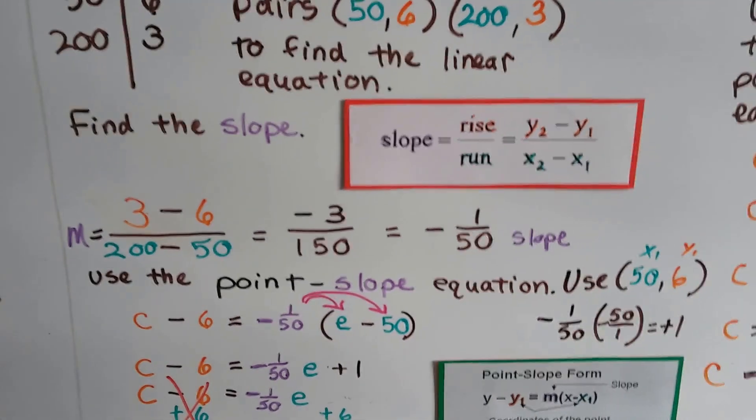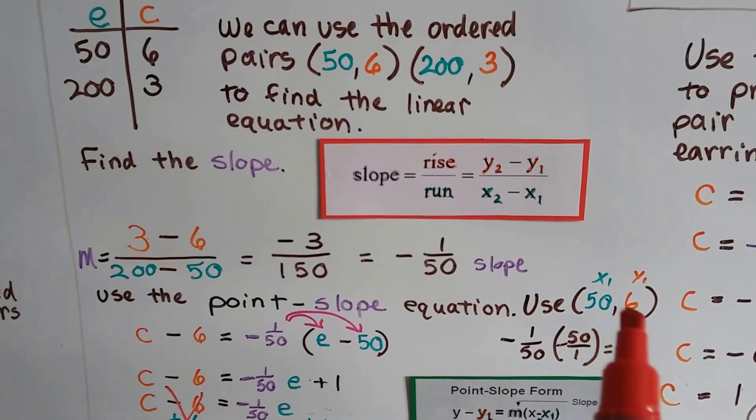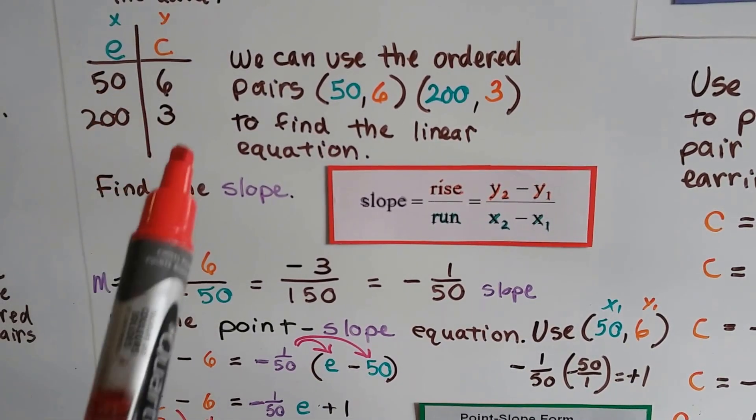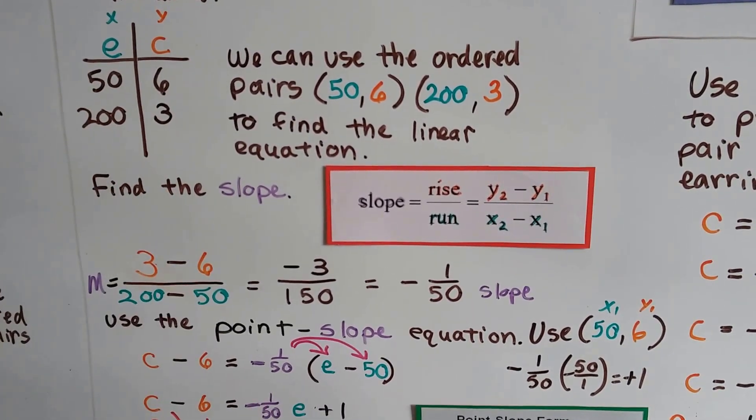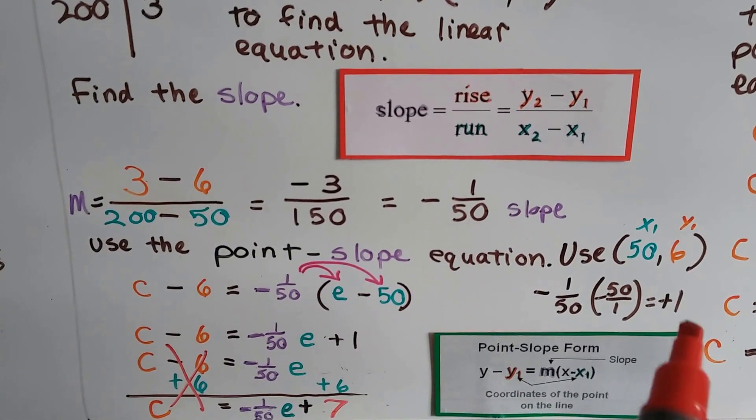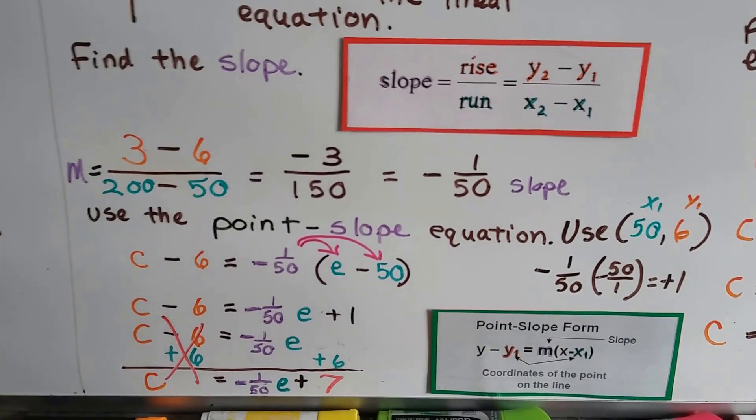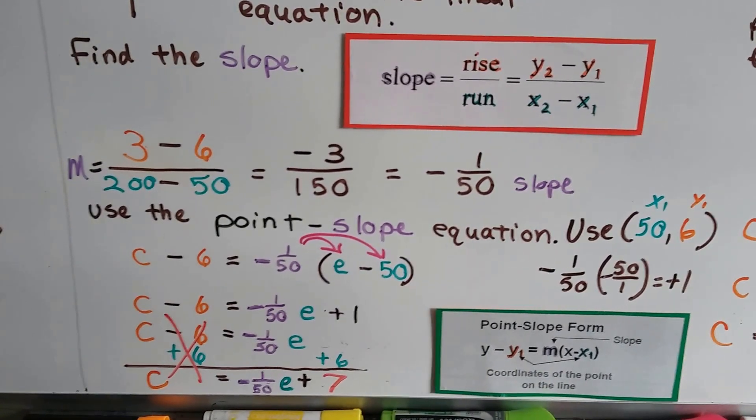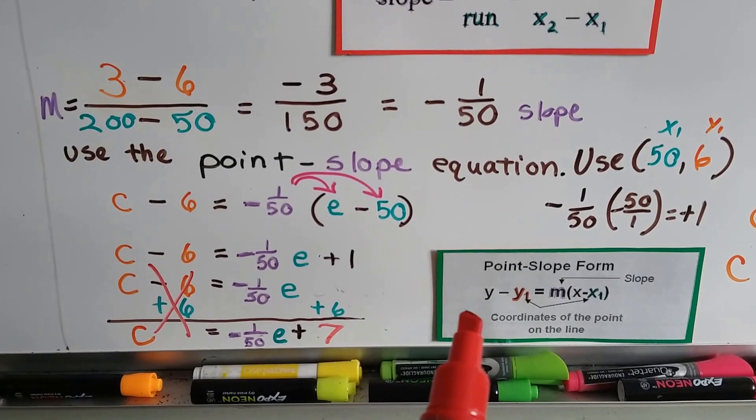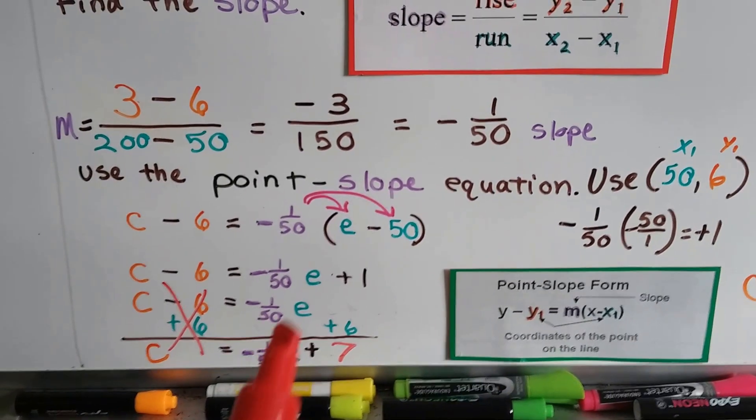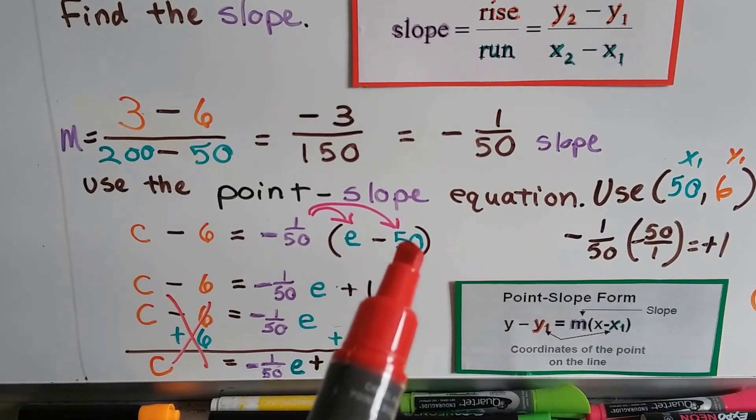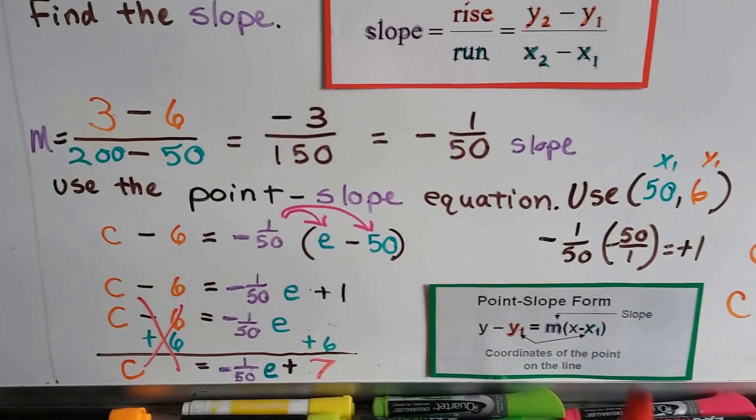Now we can use this ordered pair as our x1, y1. We could choose any one of these we want. I could use 200 and the 3 as x1, y1. But I chose to use the 50 and the 6. So now we've got our point and our slope, and we use the point-slope equation. So we're going to do it in this form right here. So our x and y are going to be e and c, and then our x1 is going to be 50, and our y1 is going to be 6. See, right here?